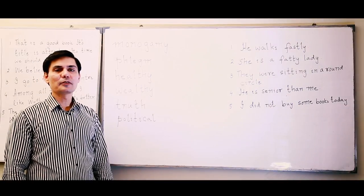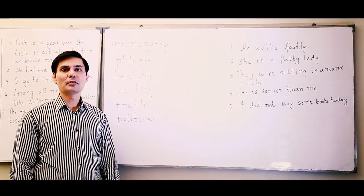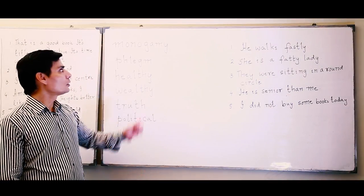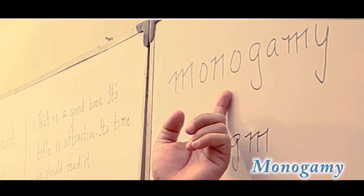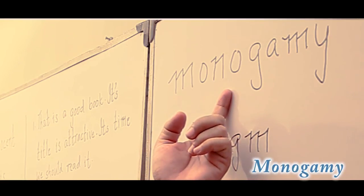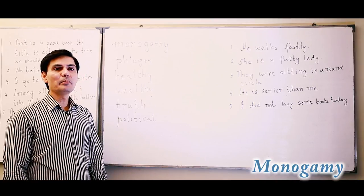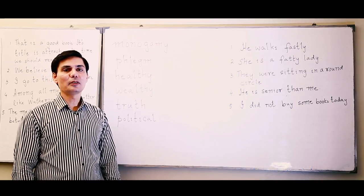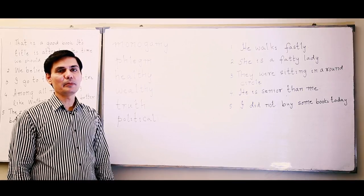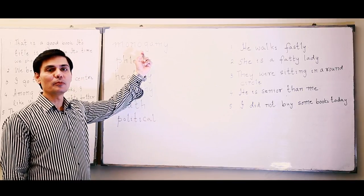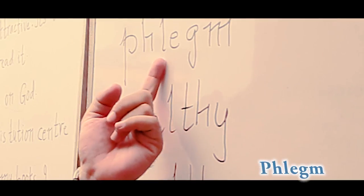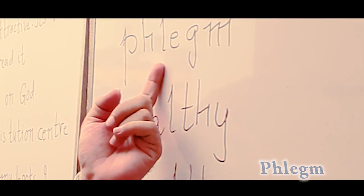Let's start with the first section: pronunciation. The first word is not 'monogamy' but 'monogamy,' which means one marriage. In the last session you had the word 'polygamy,' which meant many marriages. The second word is 'phlegm,' pronounced as 'phlegm.'